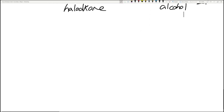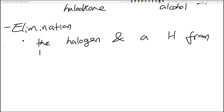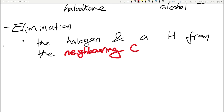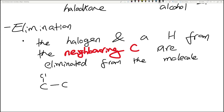The more complicated reaction to spend more time on is the elimination reaction. In elimination, the halogen and a hydrogen from the neighboring carbon are eliminated from the molecule. For a simple illustration: if you have Cl on one carbon and H on the neighboring carbon, the functional group reacts with the hydrogen from the neighboring carbon - it cannot be from the same carbon.